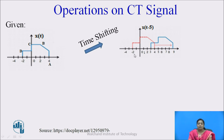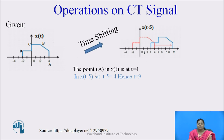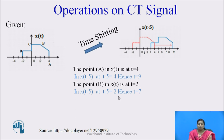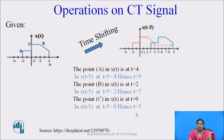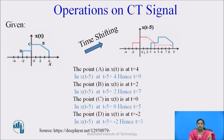Applying the time shift: x(t) shifts right to x(t - 5). Point a in x(t) at t = 4 moves to t = 9. Point b at t = 2 moves to t = 7. Point c at t = 0 moves to t = 5. Point d at t = -2 moves to t = 3. All signals are shifted towards the right side by 5 units. You can verify these shifted positions.